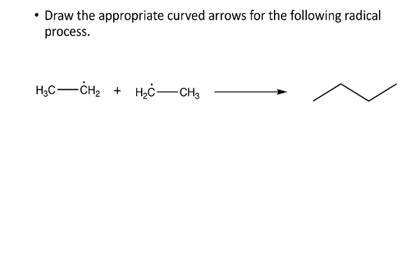In this case, we have a coupling. Our two ethyl radicals are going to combine to form butane. We're forming a new bond between each of those atoms, and so that's what the curved arrows would look like in this case.